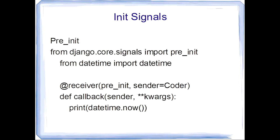So talking about pre-init, it is useful in many applications, like keeping track of time at which the client HTTP request is received on server. First of all, we need to import the package django.core.signals import pre_init. Then we call the decorator which consists of two parameters: pre_init and sender.